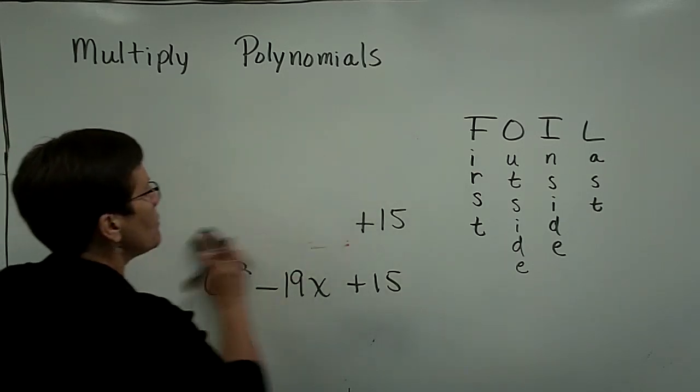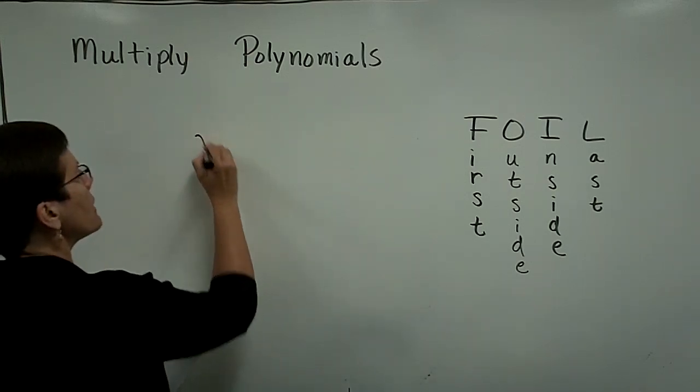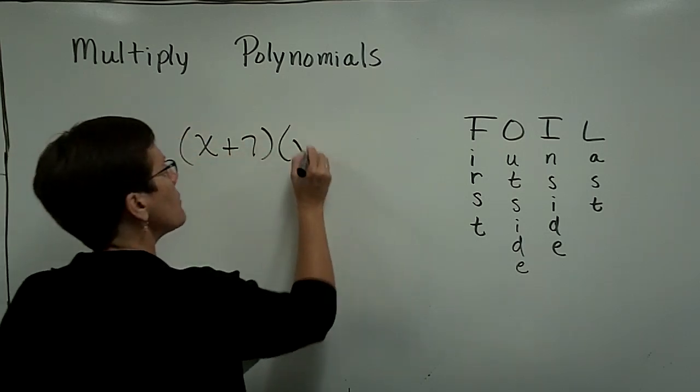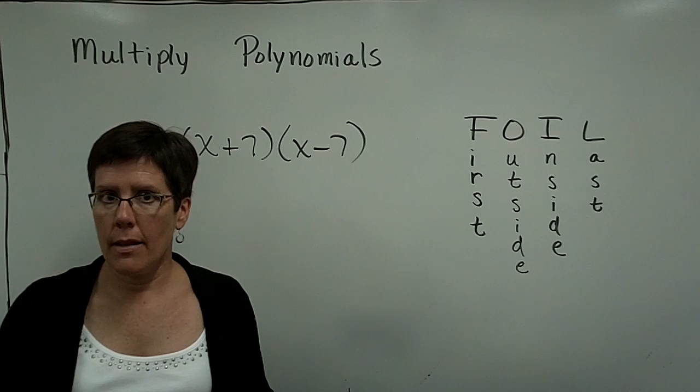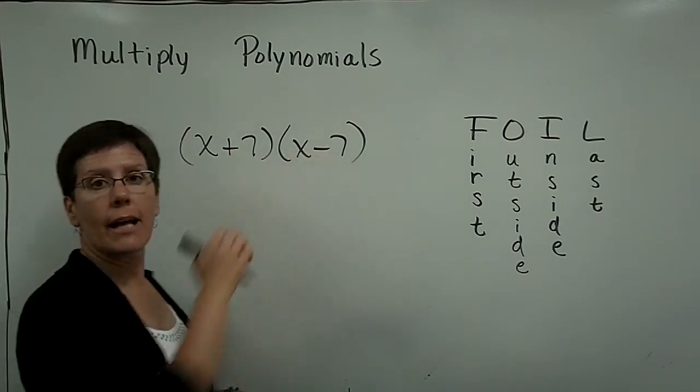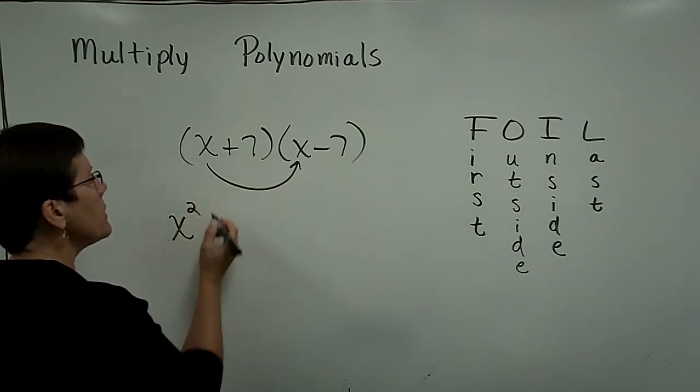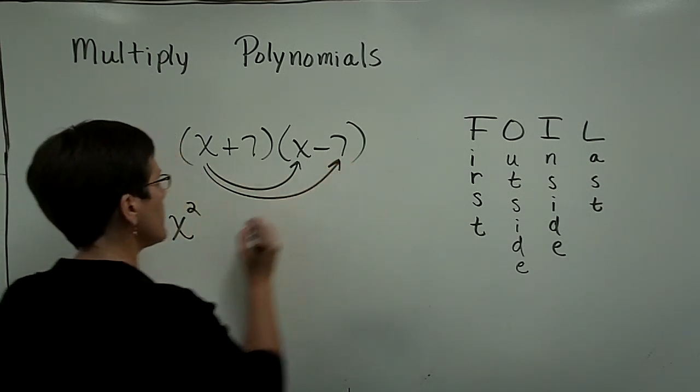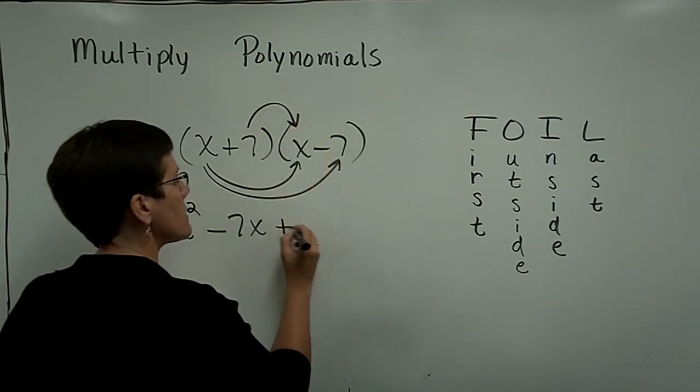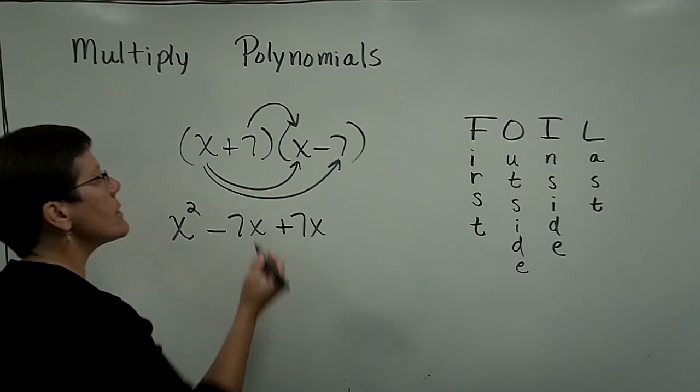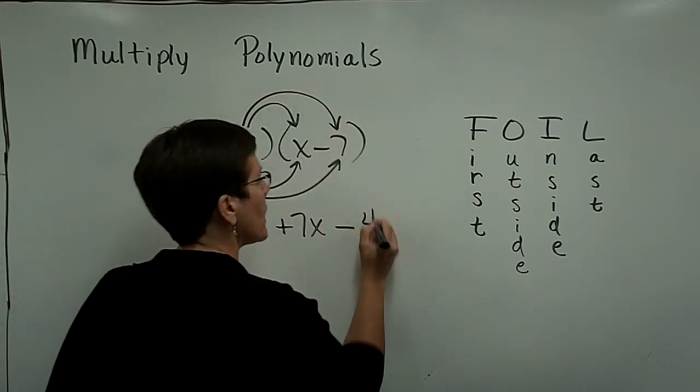Watch what happens when the binomials look almost alike, but one of them has a plus sign and one of them has a minus sign. So they look alike, but they have opposite signs. So let's FOIL this. So x times x is x squared. x times a minus 7 is a minus 7x. And a positive 7 times x is a positive 7x. And this positive 7 times a minus 7 is a minus 49.